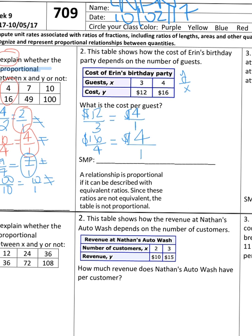So what this is telling you is the cost per guest is $4. And here you could say it's SMP2 because you're reasoning abstractly, you're reading a table, you're translating it into math, and after you represent it with fractions, you're translating the information back to adapt to the table.